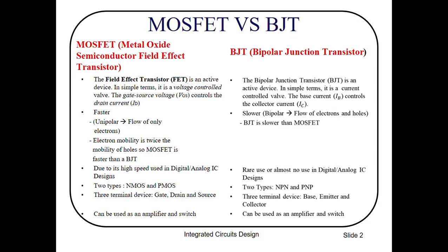MOSFET is Metal Oxide Semiconductor Field Effect Transistor and BJT is a Bipolar Junction Transistor. Both MOSFET and BJT are active devices. In MOSFET, gate-source voltage controls the drain current, and in BJT the base current IB controls the collector current IC. MOSFET is faster than BJT because MOSFET is a unipolar device and BJT is a bipolar device.